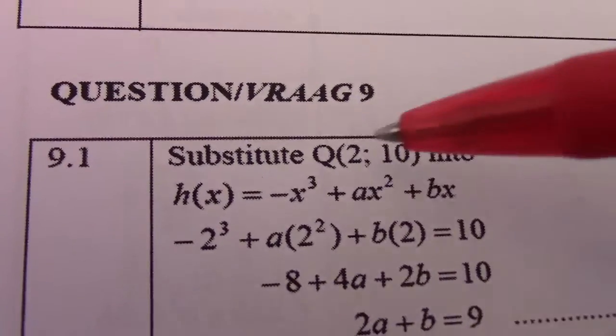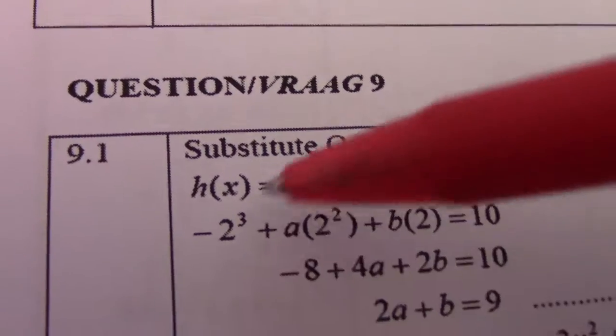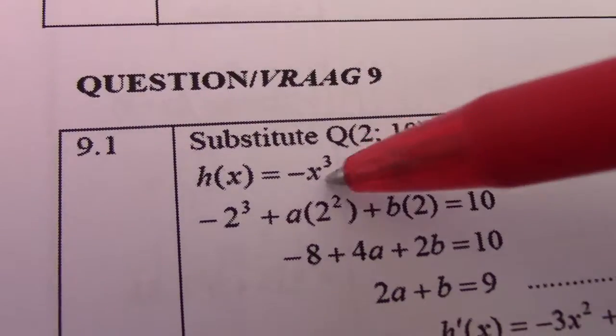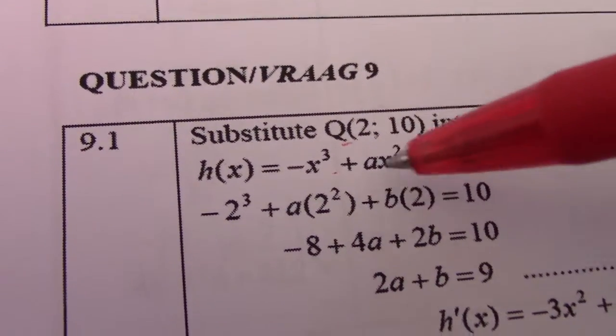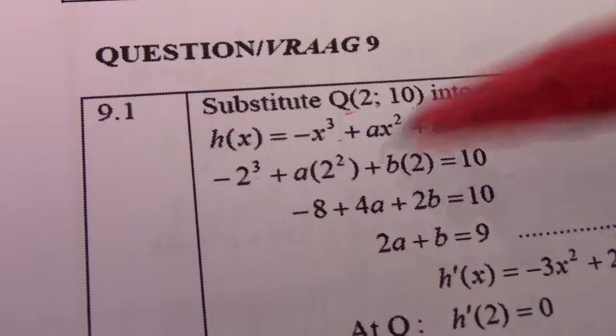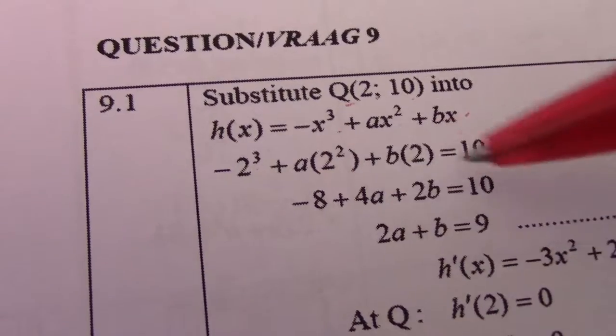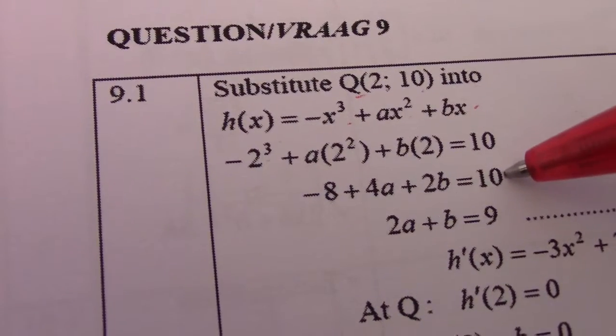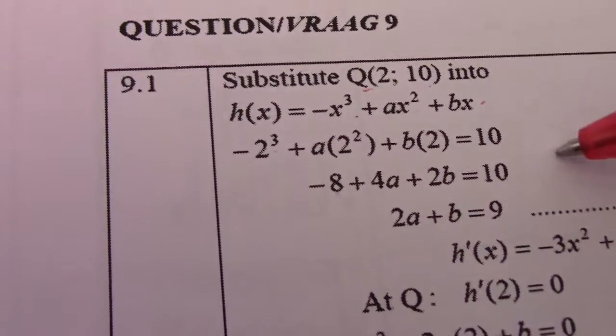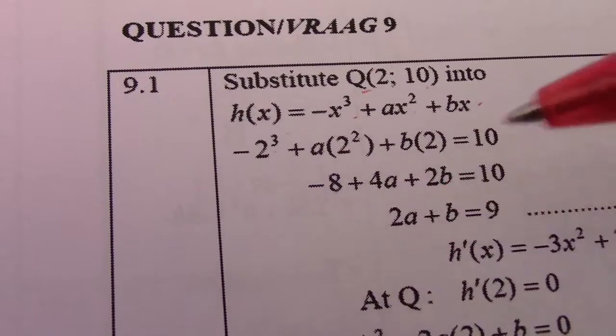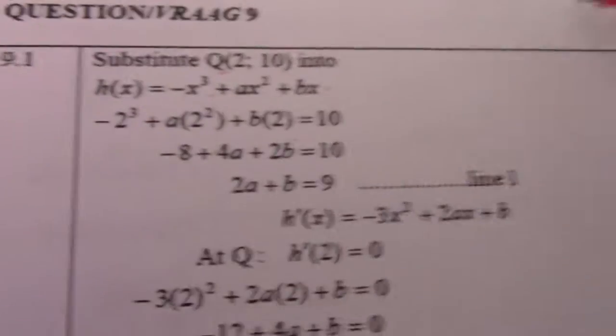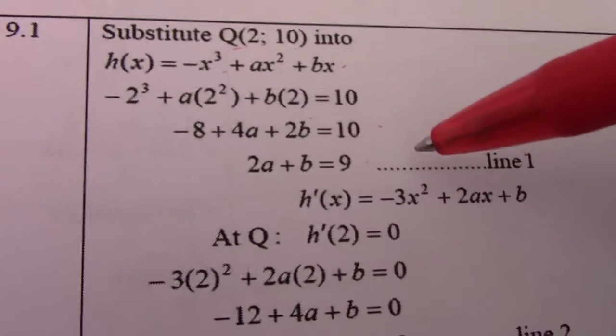If I substitute 2 in place of x, I should get y = 10. So -2³ + a(2²) + b(2) = 10, which gives -8 + 4a + 2b = 10. Taking -8 across gives 4a + 2b = 18. Dividing everything by 2: 2a + b = 9. That's equation 1.